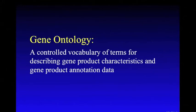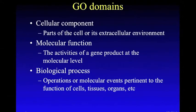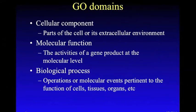Gene ontology, or GO, is a controlled vocabulary of terms for describing gene product characteristics and annotation data. GO gives us a standardized vocabulary of genes and their functions so that we can make meaningful observations. There are three domains that GO covers. One is cellular component, like parts of a cell or its extracellular environment — including structures like the nucleus or endoplasmic reticulum, or gene product groups like the ribosome. Another domain is molecular function, describing what the gene does, like being a transporter or transcription factor. The last domain is biological process, describing how the gene is involved in the functioning of cells, tissues, or organisms — from broad processes like signal transduction to specific ones like alpha-glucoside transport.